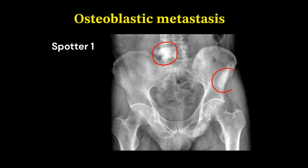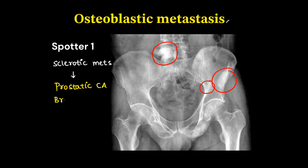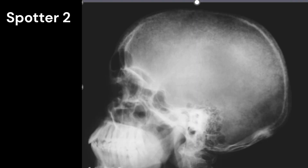The first spotter was osteoblastic or sclerotic metastasis. It is a sclerotic lesion. The most common cause will be prostatic carcinoma. Breast carcinoma metastasis can be mixed — both lytic and sclerotic — and transitional cell carcinoma can also cause this.